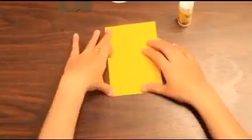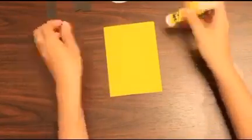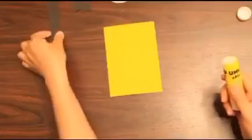Now take out your folded yellow paper, and using the glue, paste the black paper on the lower side of your yellow paper.